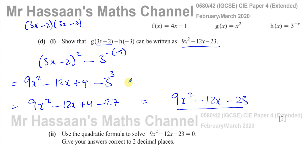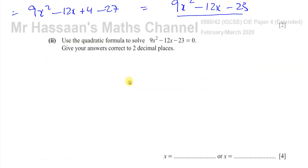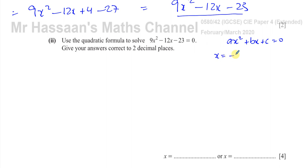For part 2 of question 10d, it says use the quadratic formula to solve 9x² minus 12x minus 23 = 0, giving your answers to two decimal places. Since they specifically asked for the quadratic formula, we don't use completing the square or factorization. For a quadratic ax² + bx + c = 0, the formula is x = (minus b plus or minus the square root of b² minus 4ac) all over 2a.